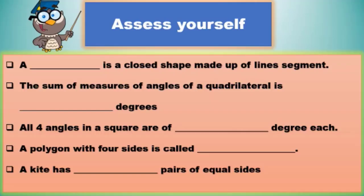Dear students, I taught all the concepts in detail. By keeping those points in mind, it's time to assess yourself. I'm giving you five minutes to answer all these given blanks. Number 1: a dash is a closed shape made up of line segments. Number 2: the sum of measures of angles of a quadrilateral is dash degrees. Number 3: all four angles in a square are of dash degrees each. Number 4: a polygon with four sides is called dash. Number 5: a kite has dash pairs of equal sides.